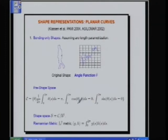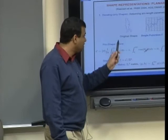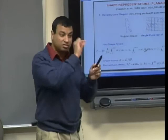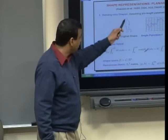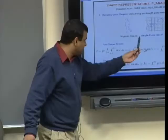We want shape analysis invariant to rotations, translations, and scaling. If you use an angle function to represent a curve, it's already invariant to translation. Rotation corresponds to adding a constant to the angle function, and we remove all rotations by requiring the average value of the angle function to equal something, say pi. There is still one degree of freedom: where do you put the origin on the closed curve? If you start at different points, you get different angle functions — but they all represent the same shape, so you want them to be the same point in your space.